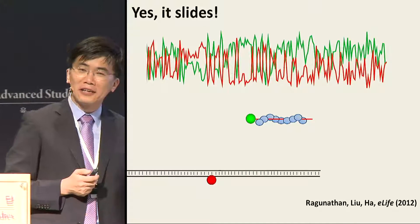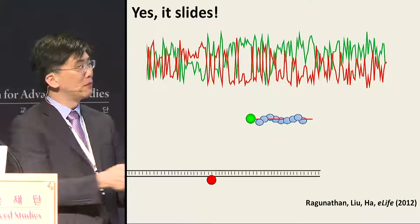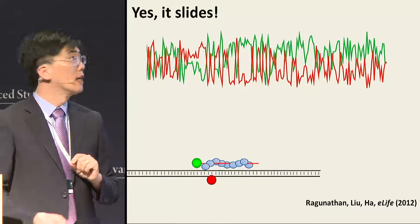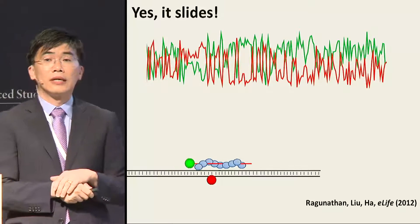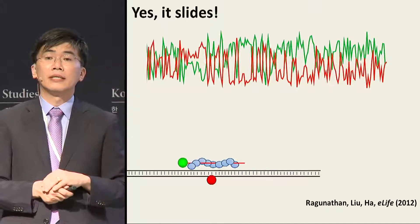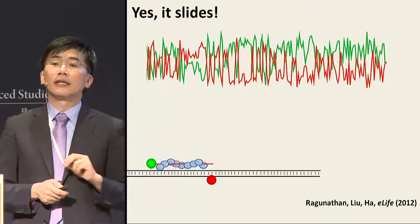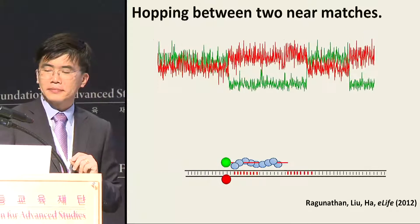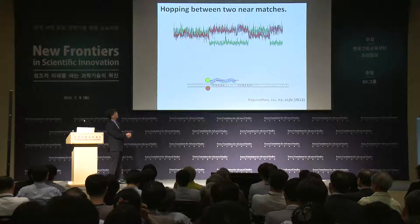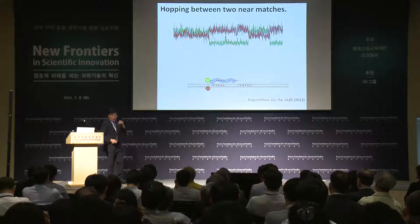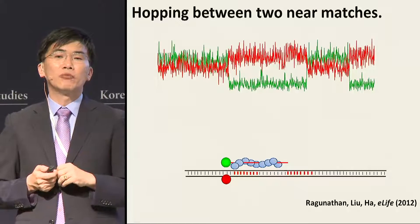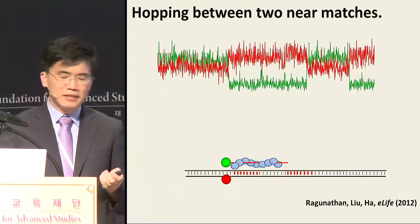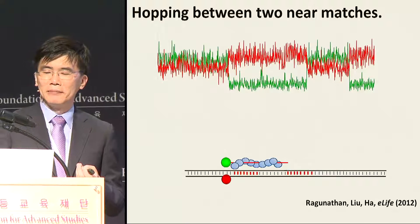We used FRET technology to obtain evidence of sliding. If you label the filament with green and the DNA — without the target sequence — with red, then as the filament slides, you see fluctuations in red and green intensities that are anti-correlated. Based on this and other data, we believe we have strong evidence that sliding occurs over up to about 200–300 base pairs. We also inserted two partially matching sequences — like dating twin brothers — and the data showed the filament hopping between them and going back and forth.